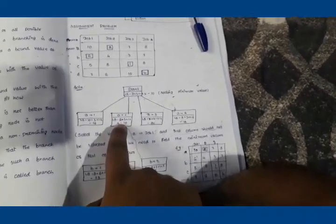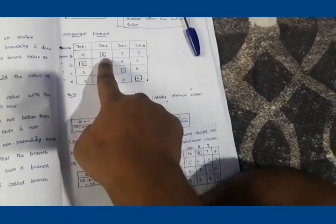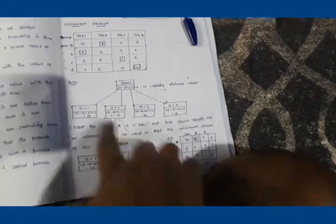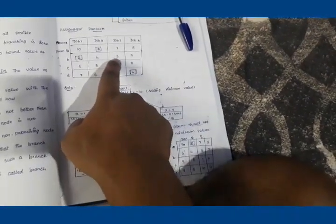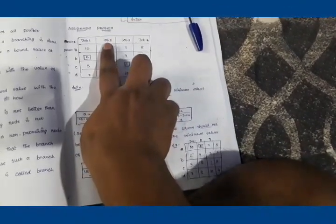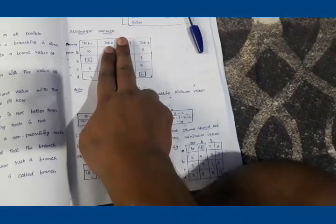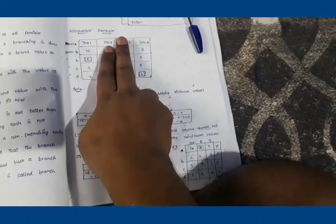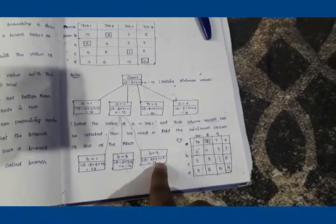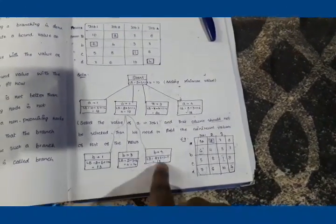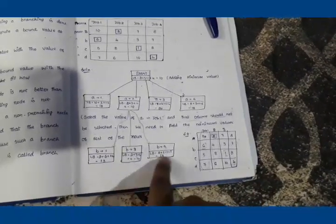For B assigned to Job 3: A=2 (cost 2), B=3. Hiding both columns, for C the minimum from remaining jobs is 5 and for D the minimum is 4. Similarly, we calculate the lower bound for B assigned to Job 4. After computing all three cases, the minimum lower bound is 13, so we continue branching from B assigned to Job 1.